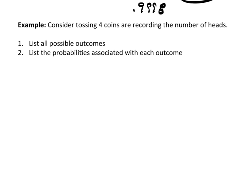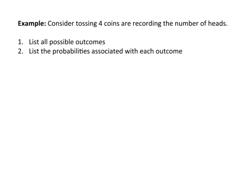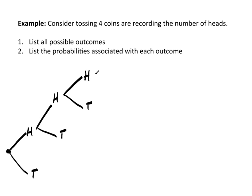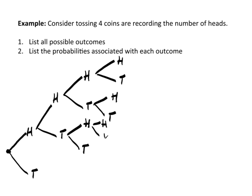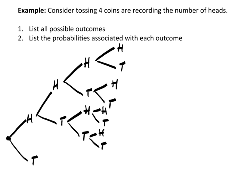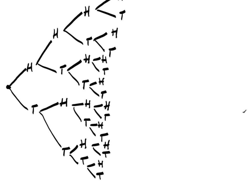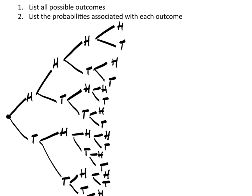Let's consider tossing four coins and recording the number of heads. We did this earlier with three coins, so four is the exact same thing with one more step. I'm going to start building a tree: the first coin gives a head or tail, then the second coin, again a head or tail, then the third coin, then the fourth coin. I just completed this table — it got a little crunched trying to fit it all in, but all the outcomes are here. So let's start working on this probability distribution.